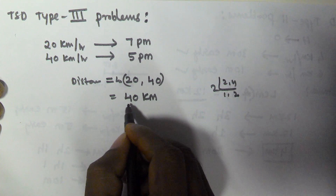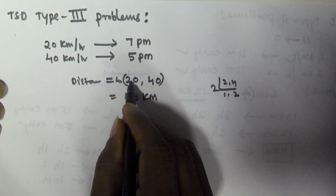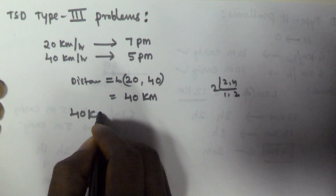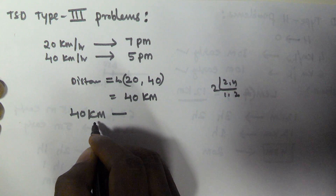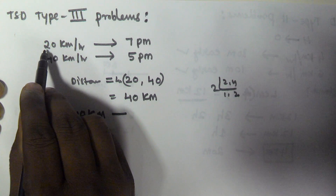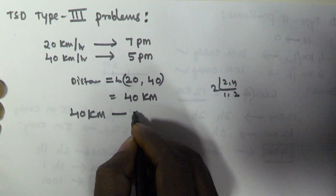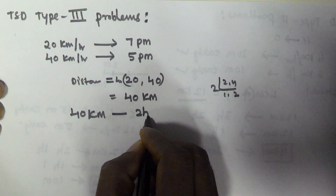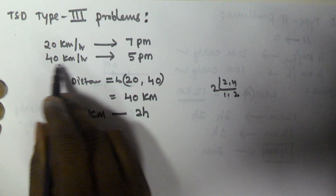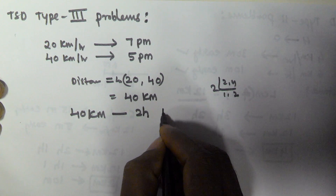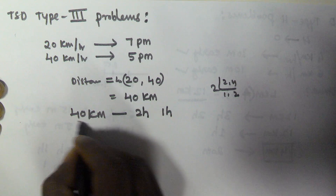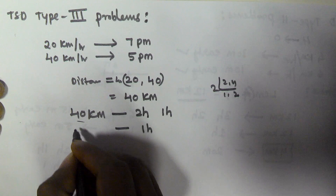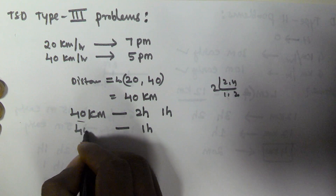I am taking the constant value of 40 km as the assumed distance, which is the LCM of both speeds. If the distance is 40 km and on the first day he is travelling with 20 kmph, he takes 2 hours to reach the office. On the second day, travelling with 40 kmph, he takes 1 hour. So the difference is 1 hour.